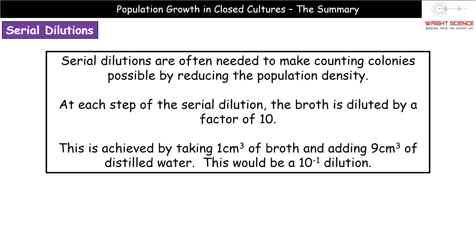One of the problems with that process is that if we take samples from a typical bacterial culture, there is a high probability that we'll find it incredibly difficult to count the number of colonies on the agar plate, because we're going to have very high population densities. The solution is a technique called serial dilution. The purpose of serial dilution is to reduce the population density on the plate, making the number of colonies possible to count.